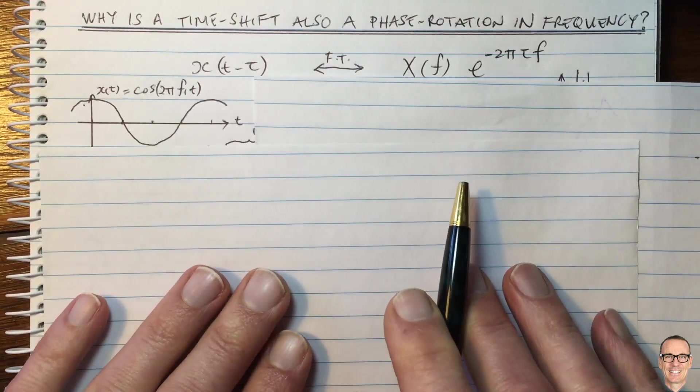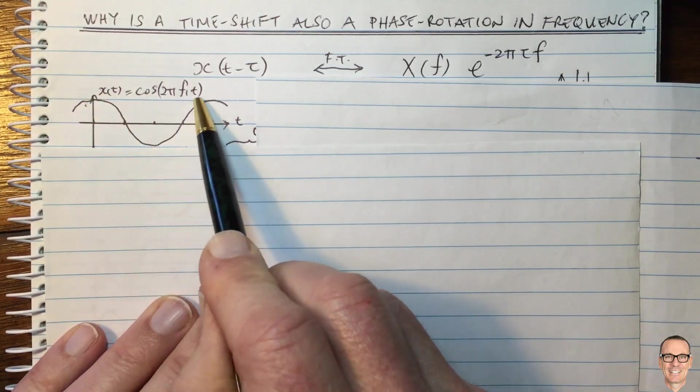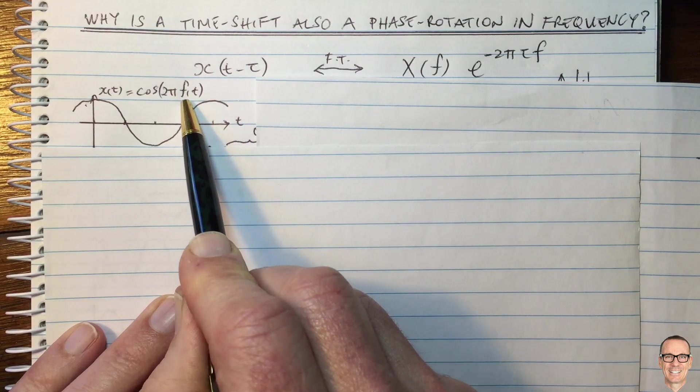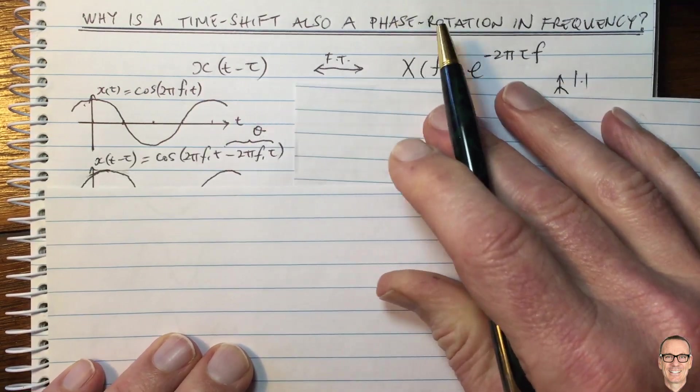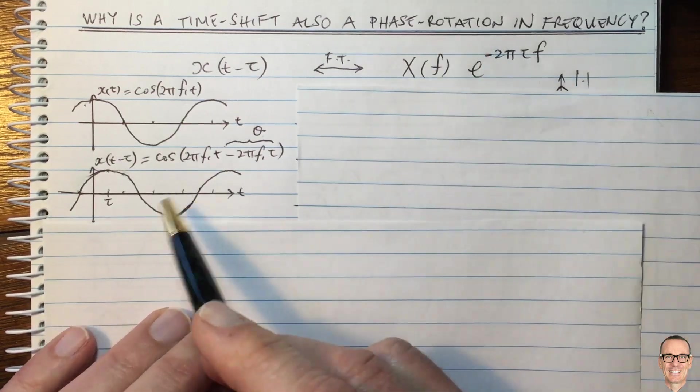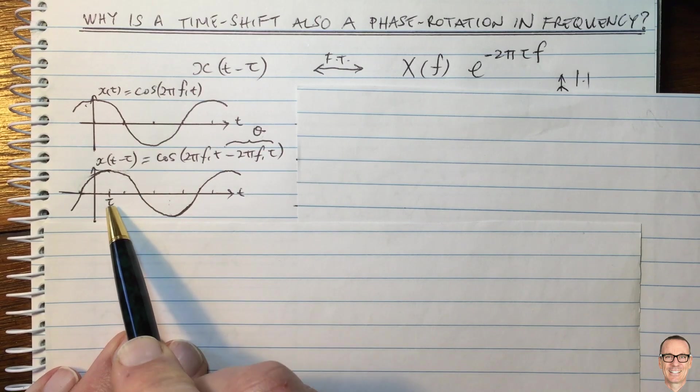Well, let's look at an example of the basic cos waveform. So here I've plotted a cos waveform at a particular frequency F1. Now let's look at what happens when we time shift that waveform. So here I've drawn the time shifted waveform. You can see it shifted to the right by Tor.